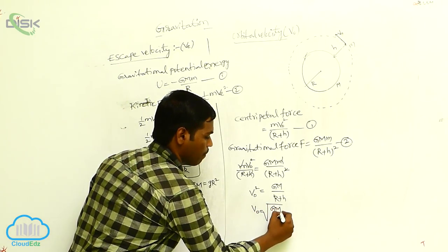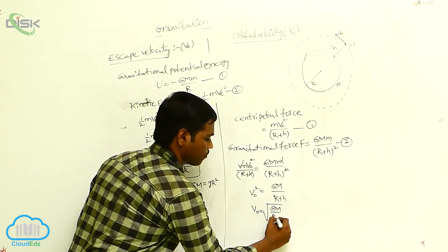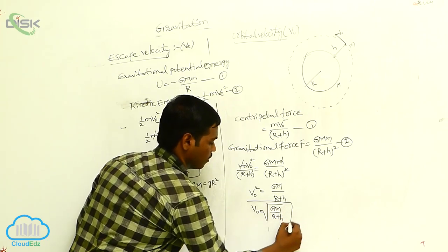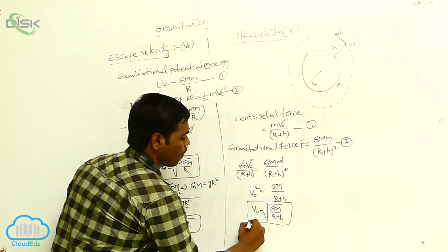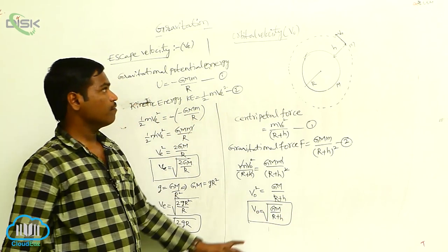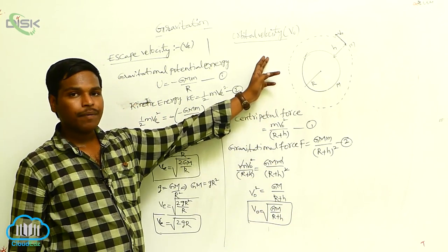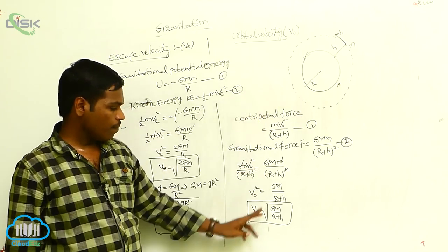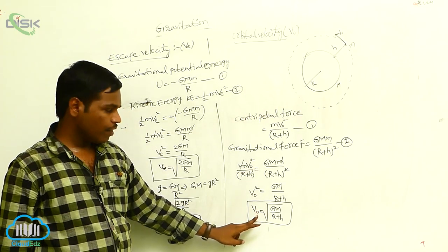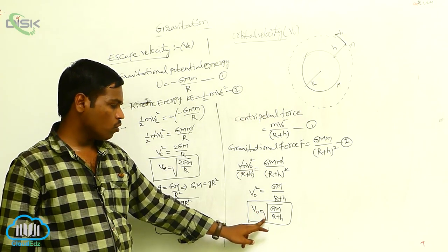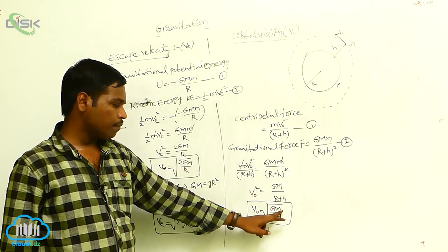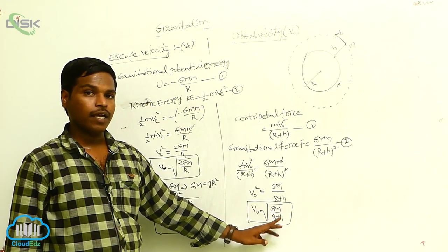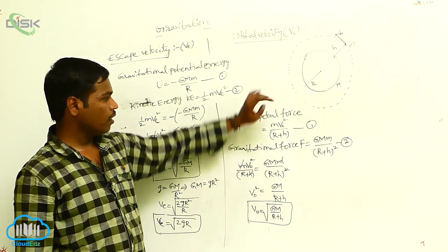V naught equals the square root of GM by (R + h). This is the equation for orbital velocity. The orbital velocity V naught equals under root capital G M by (R + h).